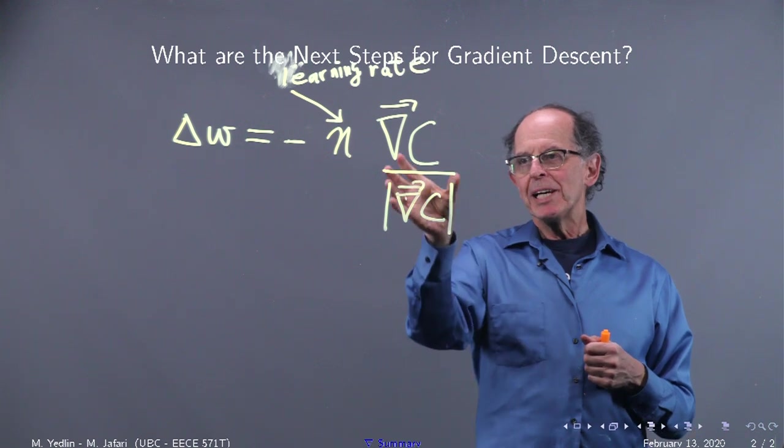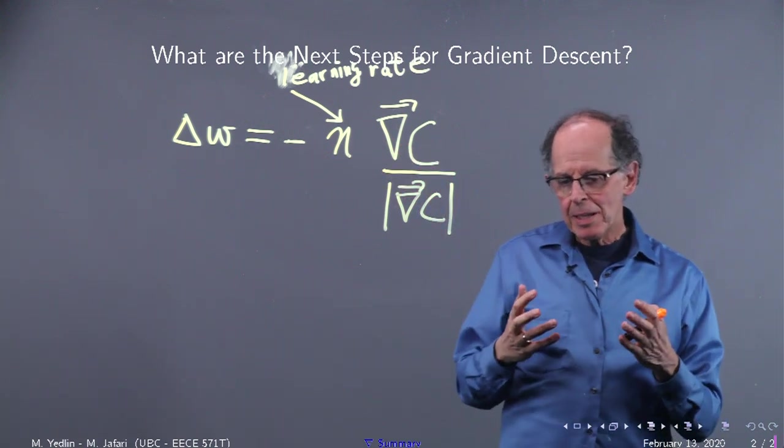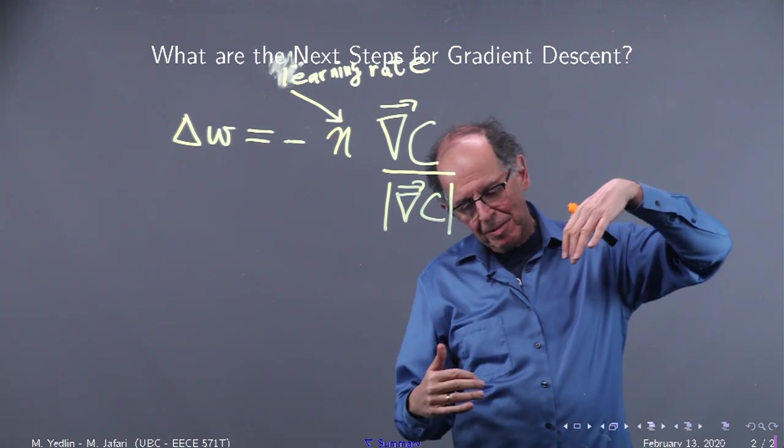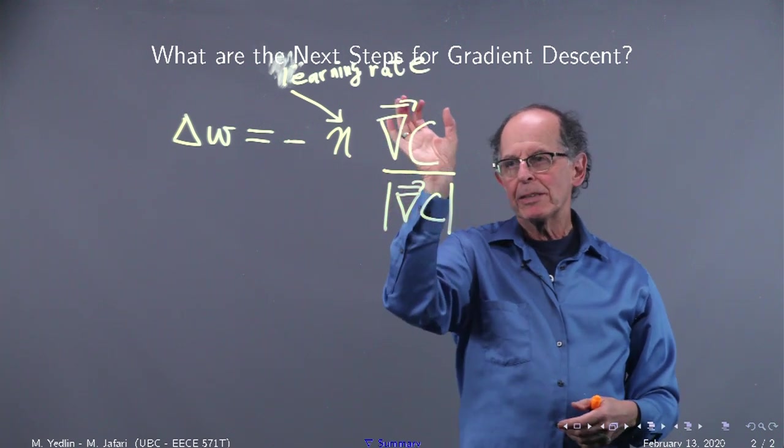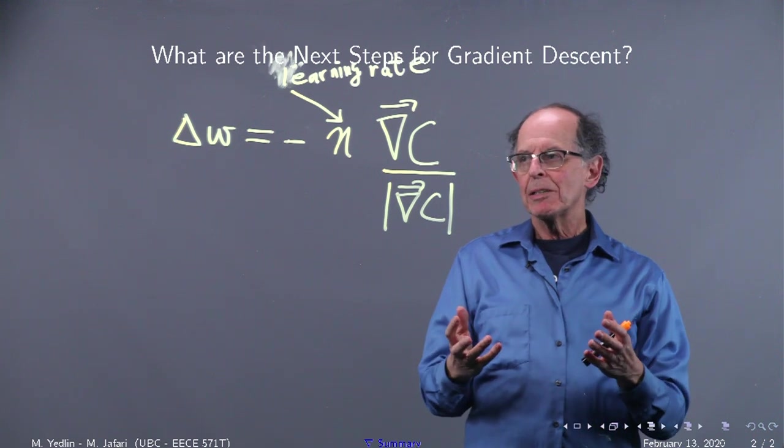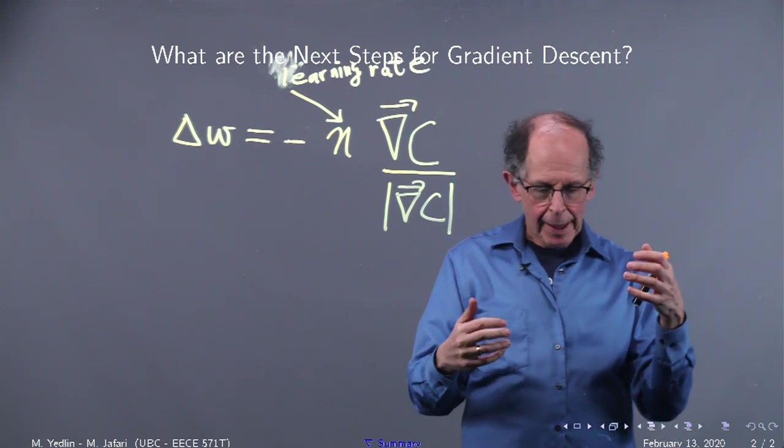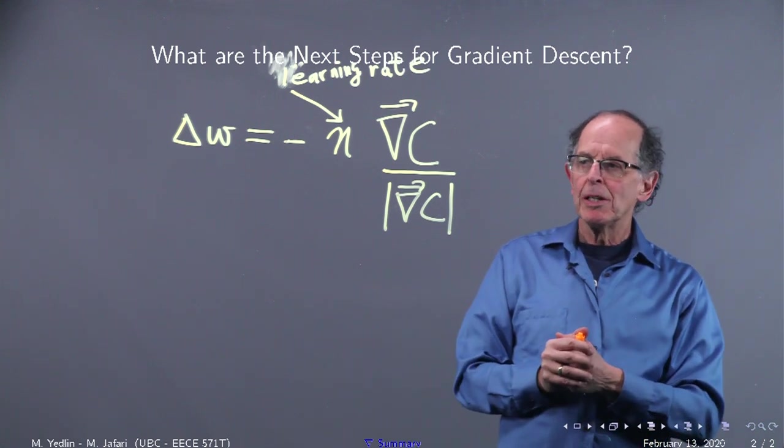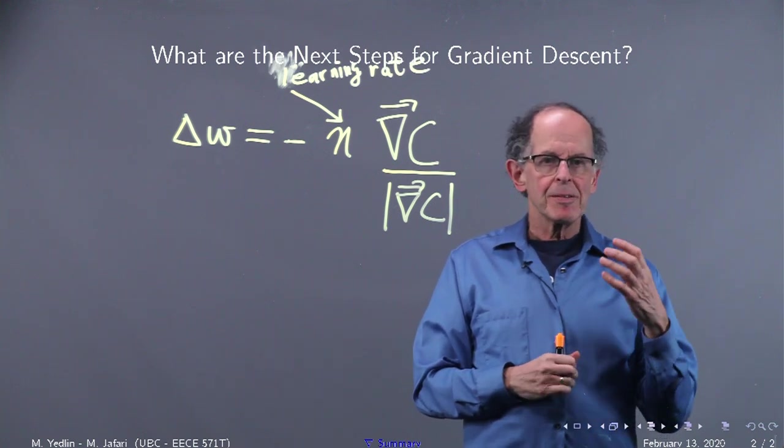Also, you can play with the direction of the stepping. So you can play with the amount and the stepping, amount and direction. And so current algorithms involve using previous values of the amounts and the directions to get the best trajectory.